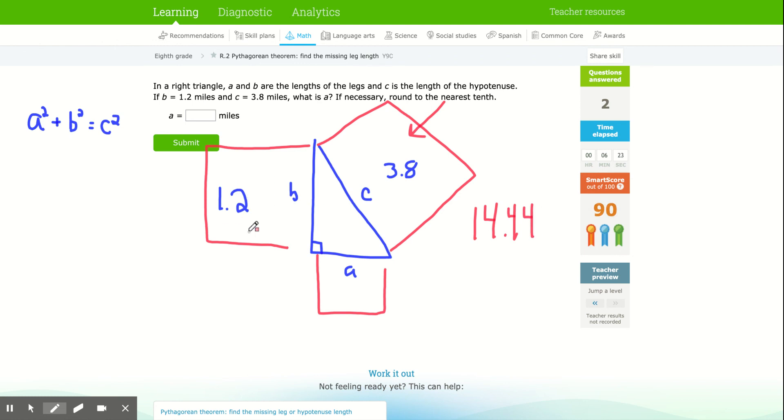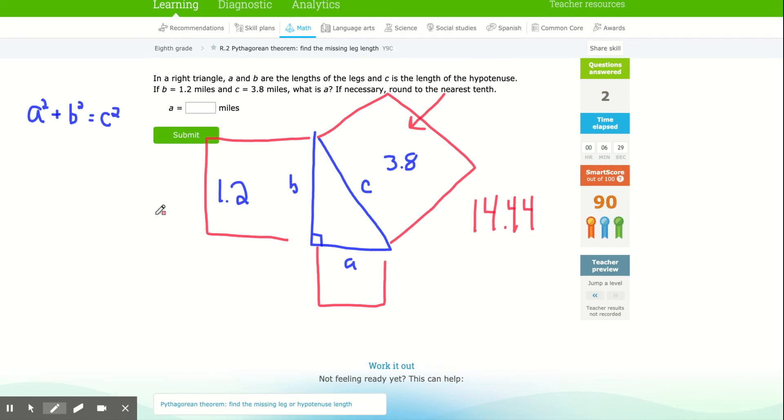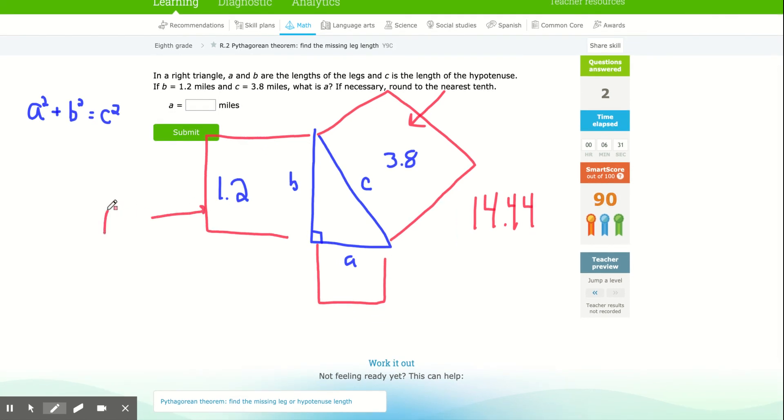I'm going to square 1.2. 1.2 times 1.2 is 1.44. So the area of this square here is 1.44.